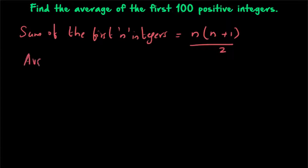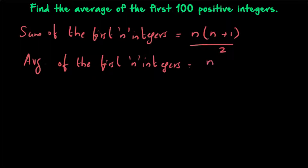You are asked to find out the average, so let's derive a common formula for the average of the first n integers. The average of the first n integers is given by sum divided by n, so n(n+1)/2 divided by n, which gives you (n+1)/2.